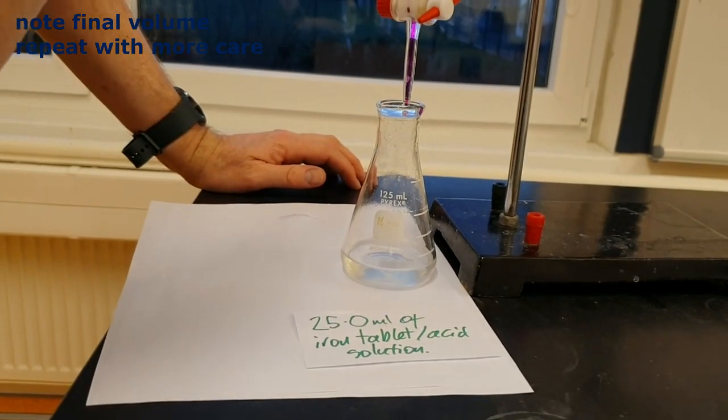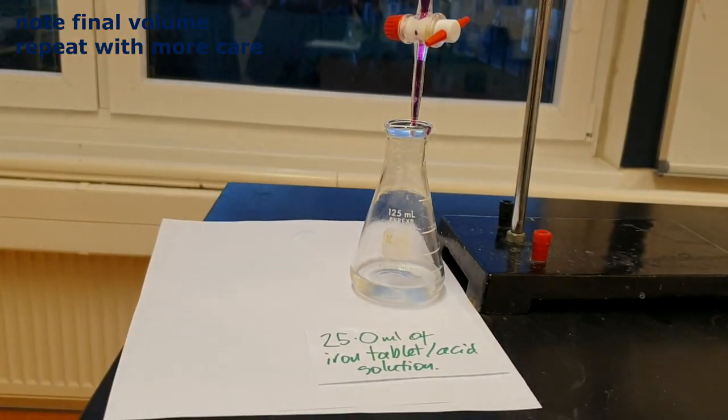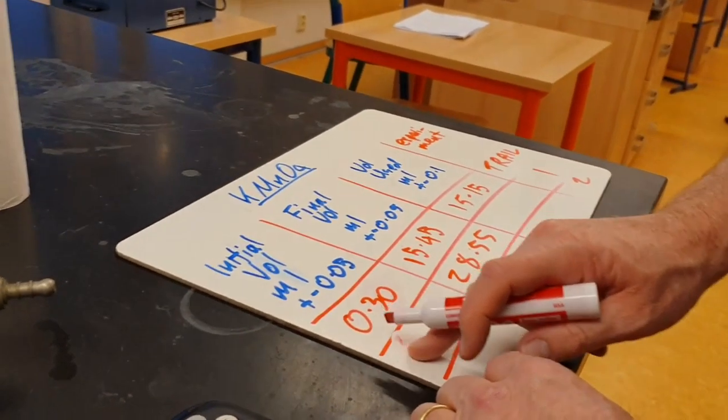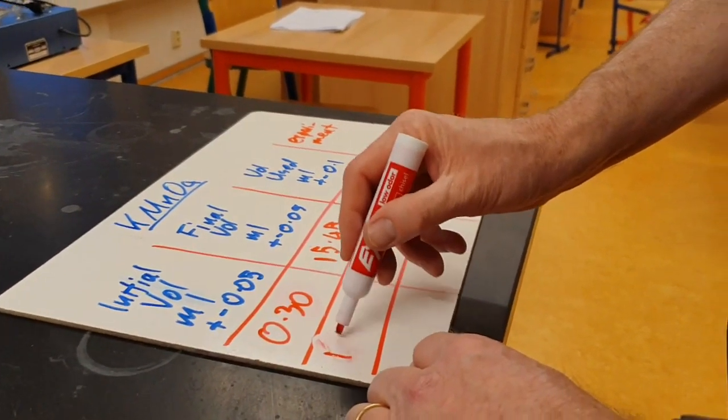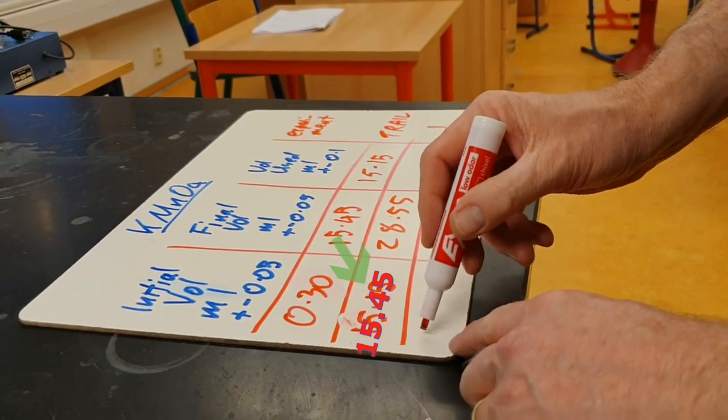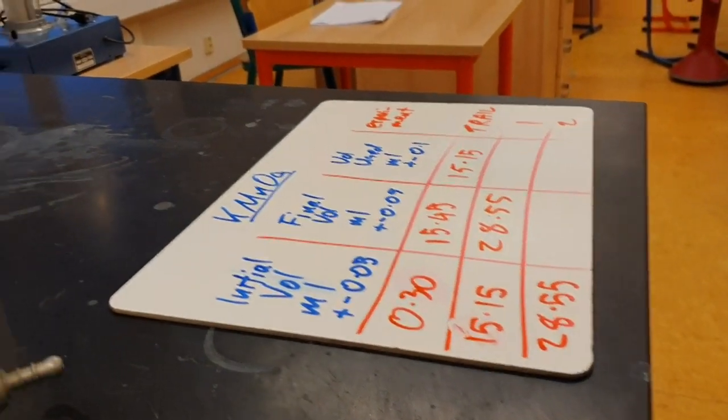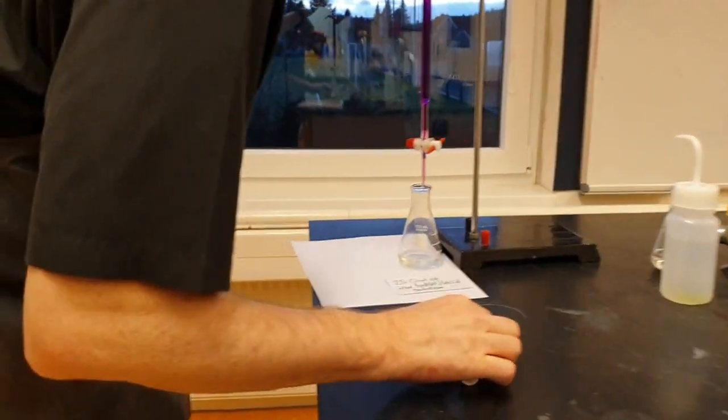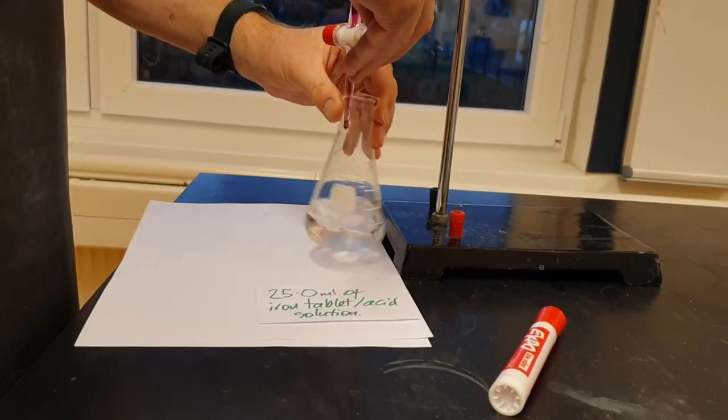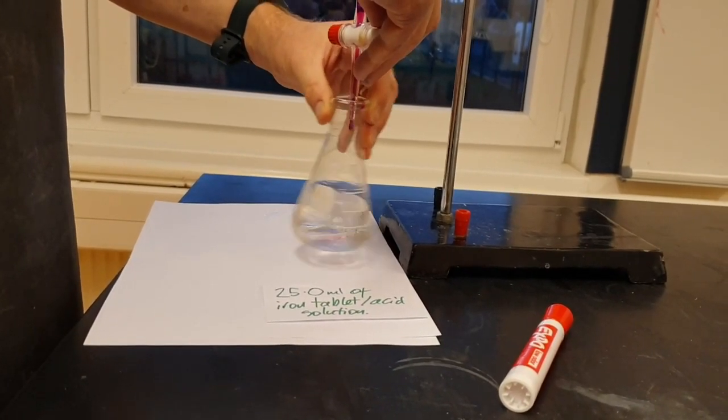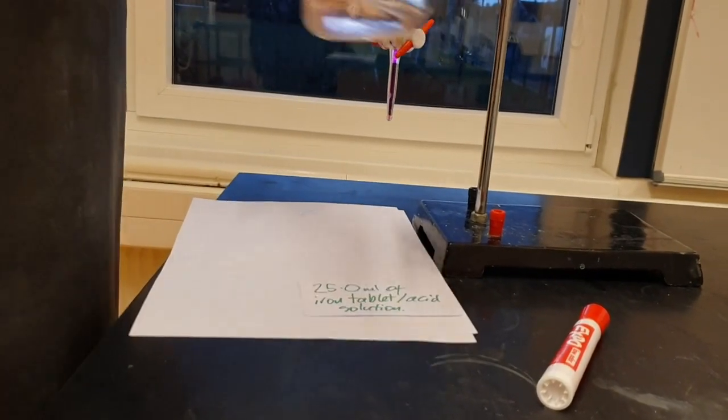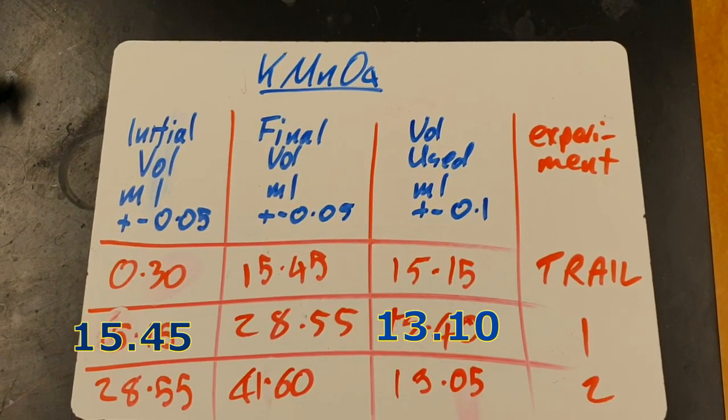So the volume for that is 28.55. And so 28.55 is where we're going to start. We've still got enough. 28.55. So I'm going to add 10. So I'm going to add 10. That's it. So there's the final data.